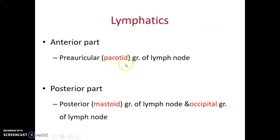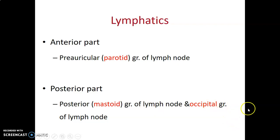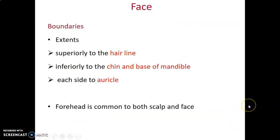For lymphatic drainage, the anterior part of the scalp drains into the parotid nodes, also called the preauricular nodes, which are in front of the auricle. The posterior part of the scalp drains into the mastoid group of nodes and the occipital lymph nodes. In the next lecture series we will discuss the anatomy of the face.